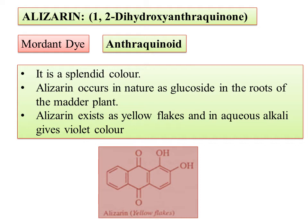The third dye is Alizarin — 1,2-dihydroxyanthraquinone. Some substances cannot be used as dye directly; we have to take another substance — a mordant — to make the compound soluble in water. Usually the dye will be insoluble in water. In order to make your compound soluble in water, we are going to use a mordant. It is anthraquinoid. If you know quinoid theory, they act as an oxochromophore, so they will be highly colored in nature. Alizarin occurs in nature as a glucoside in the roots of the madder plant. Alizarin exists as yellow flakes and in aqueous alkali gives a violet color.